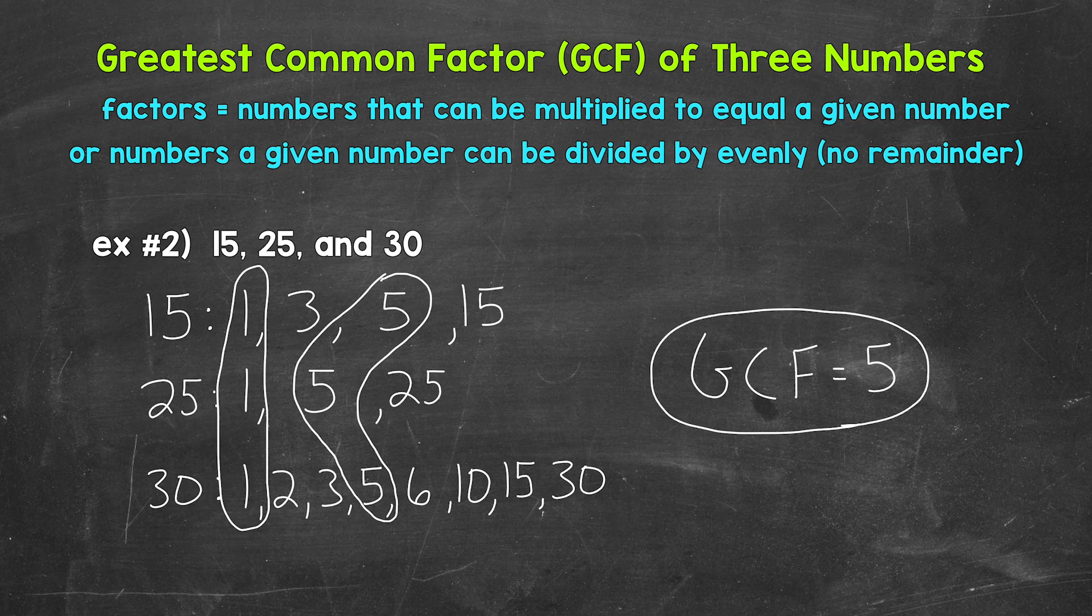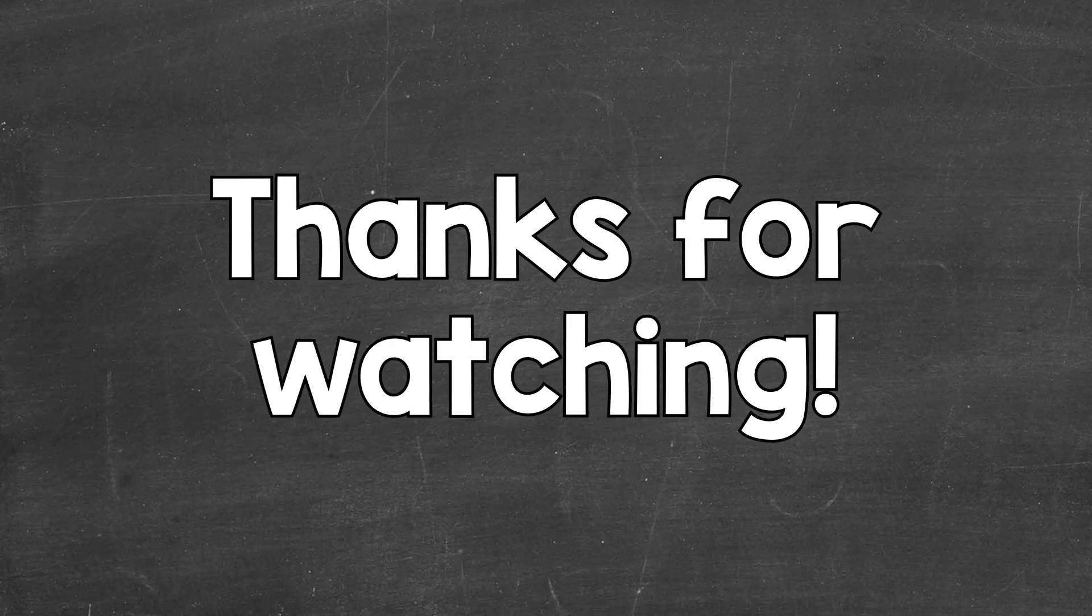So again, the greatest common factor of 15, 25, and 30 is 5. So there you have it. There's part 2 of finding the greatest common factor of 3 numbers. I hope that helped. Thanks so much for watching.